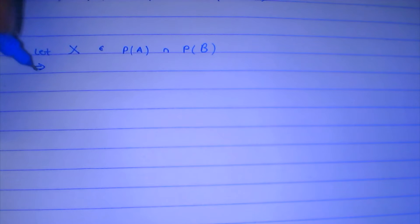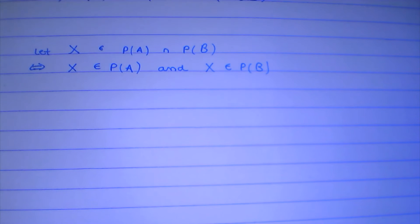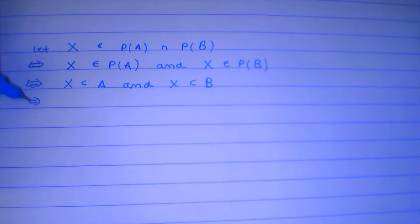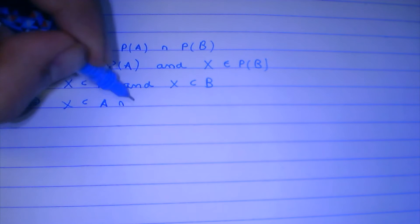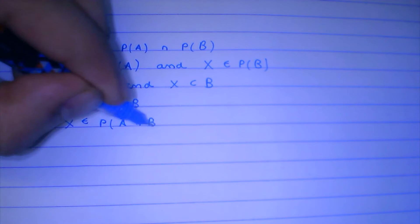Let X be any arbitrary set, and let X belong to power set of A intersection power set of B. What this implies is that X belongs to power set of A and X belongs to power set of B. In that case, X is a subset of A and X is a subset of B, which means that X is a subset of A intersection B. And in that case, X is going to belong to power set of A intersection B.